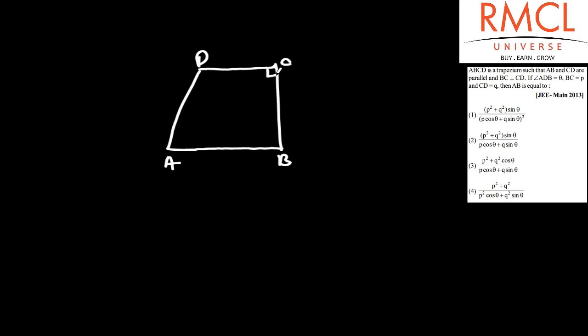The angle ADB is given as theta. Suppose angle BDC is alpha. If angle BDC is alpha, then angle DBA will also be alpha.